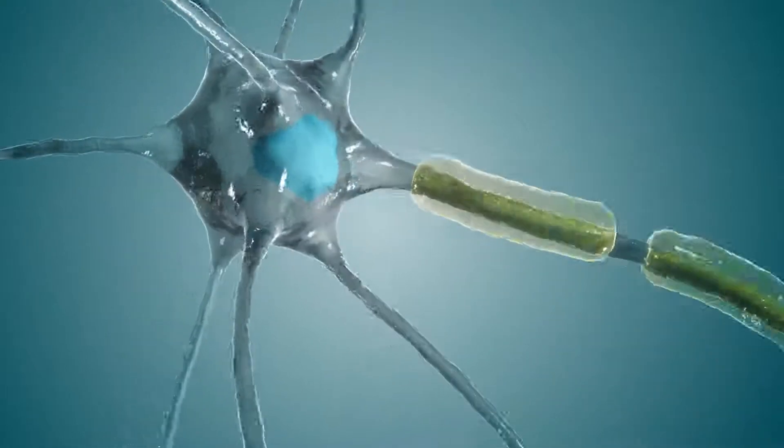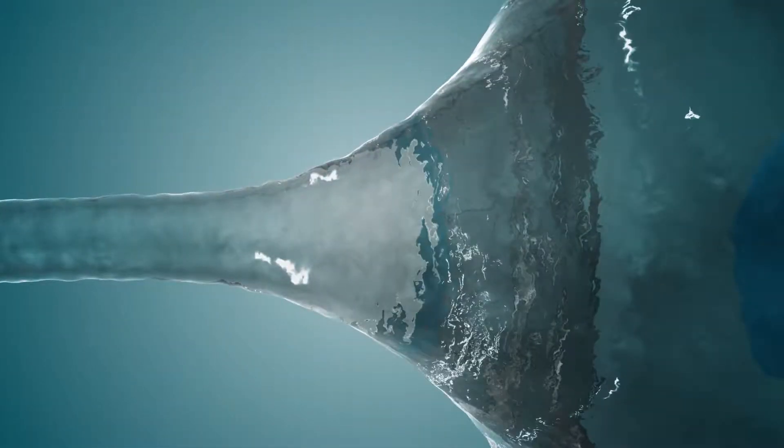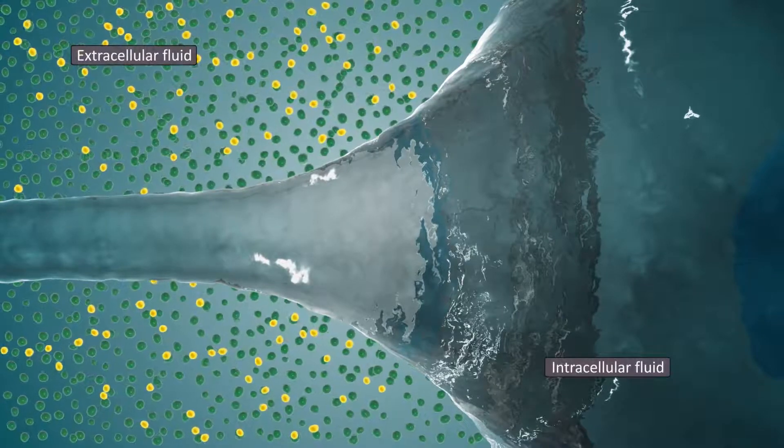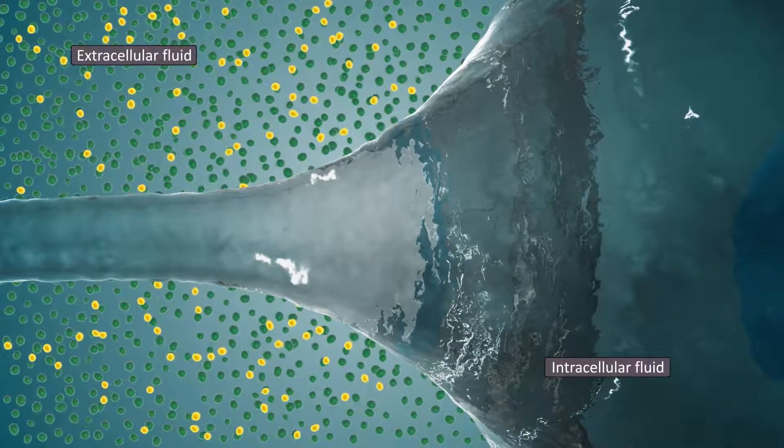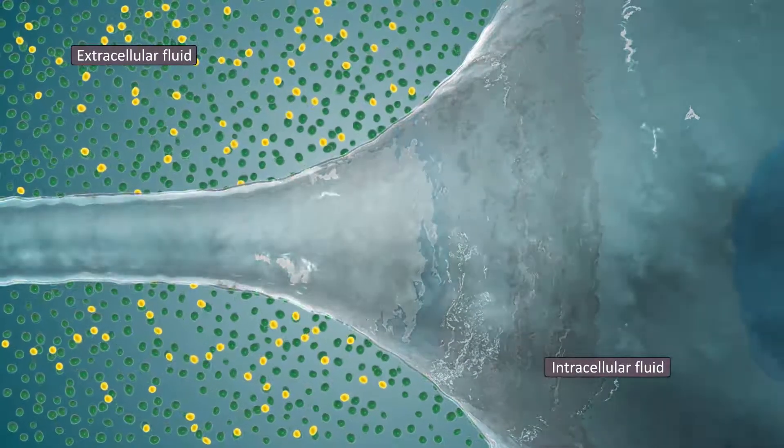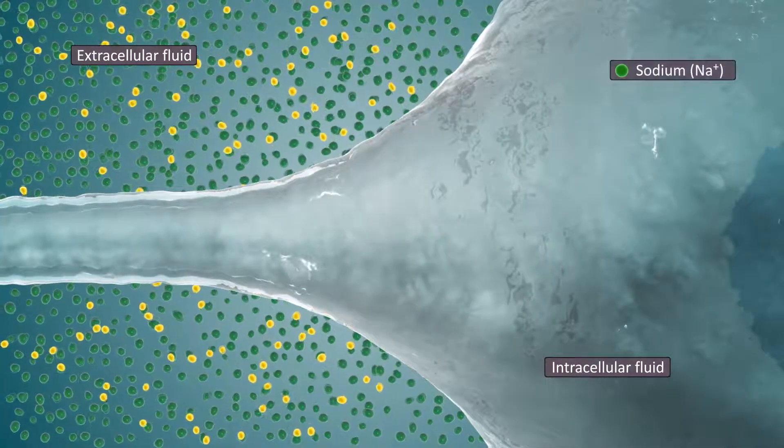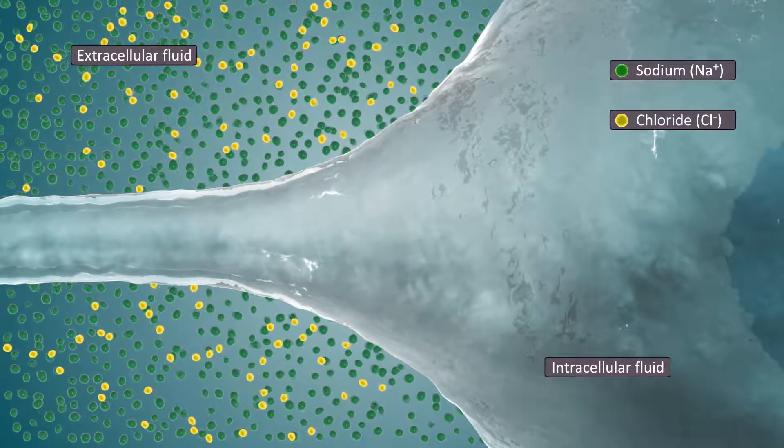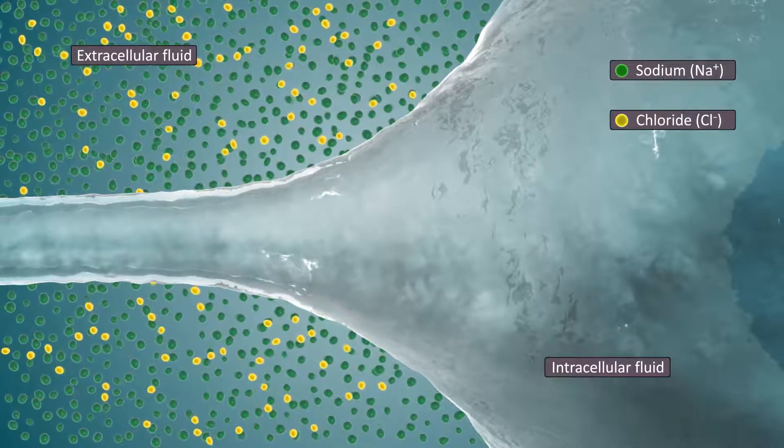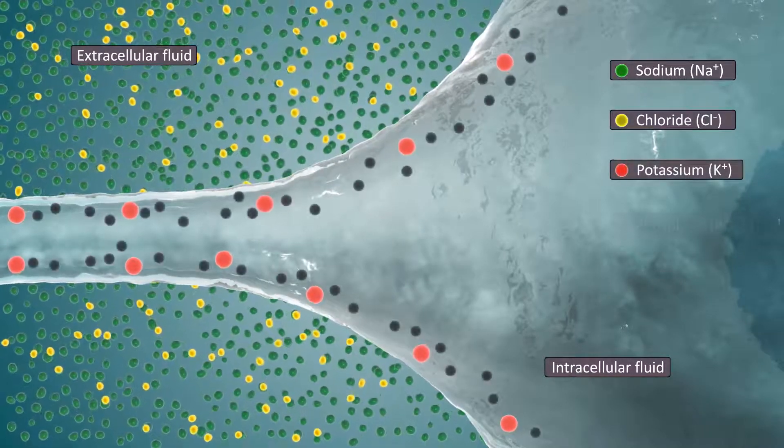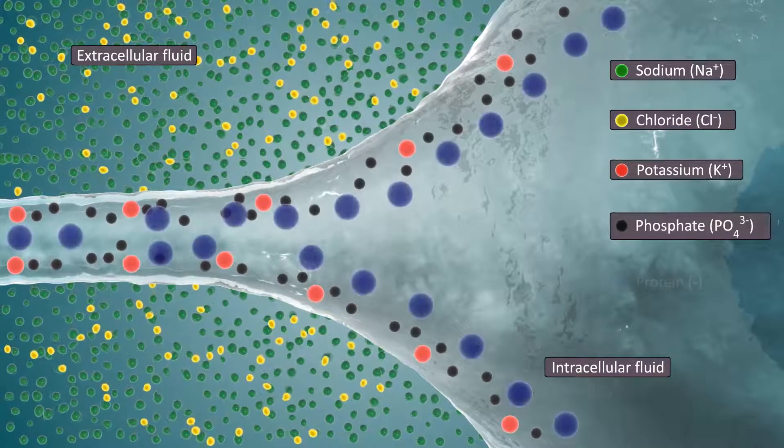To understand how a membrane potential occurs, we need to first consider the chemicals on either side of the cell membrane. The outside of each cell is bathed in a sodium chloride solution, made up of positively charged sodium ions and negatively charged chloride ions. Inside the cell, in contact with the cell membrane, are positively charged potassium ions, negatively charged phosphate ions, and anionic proteins.